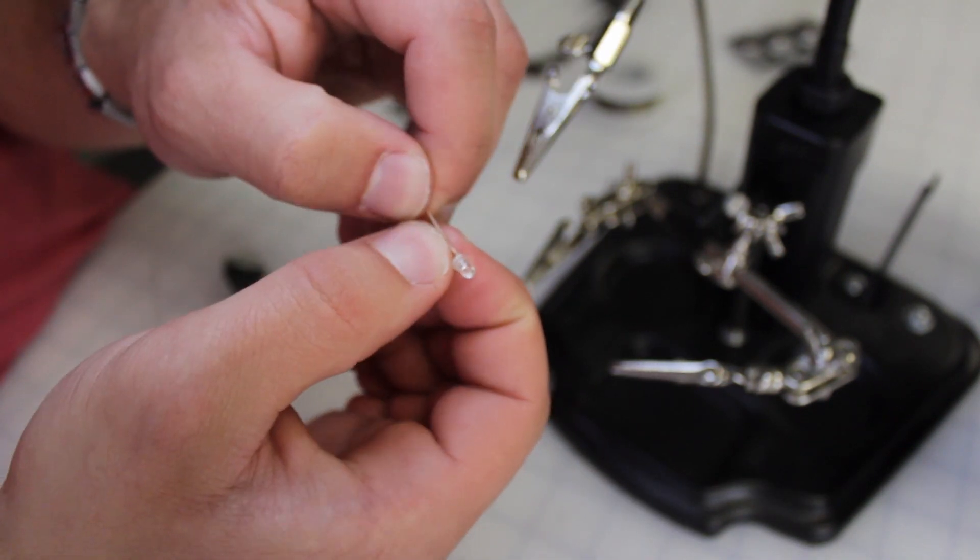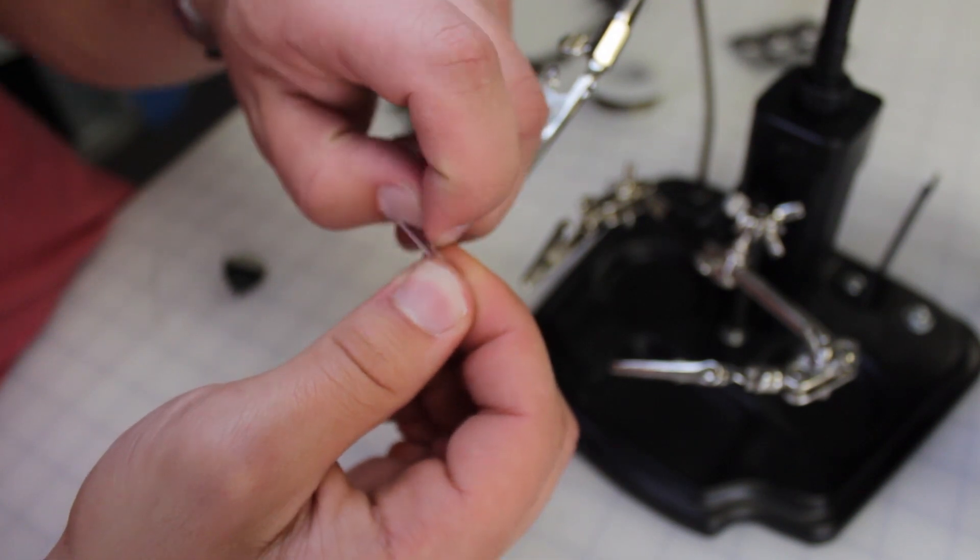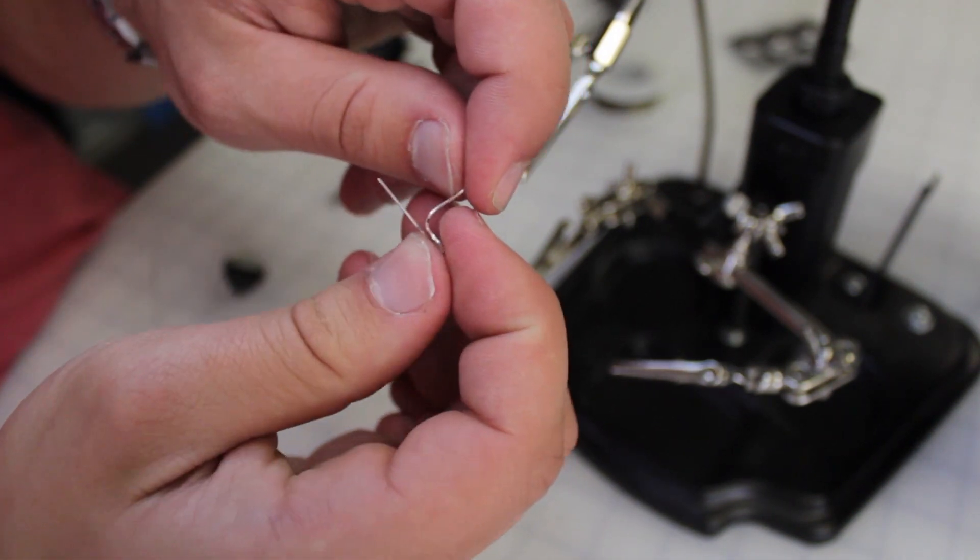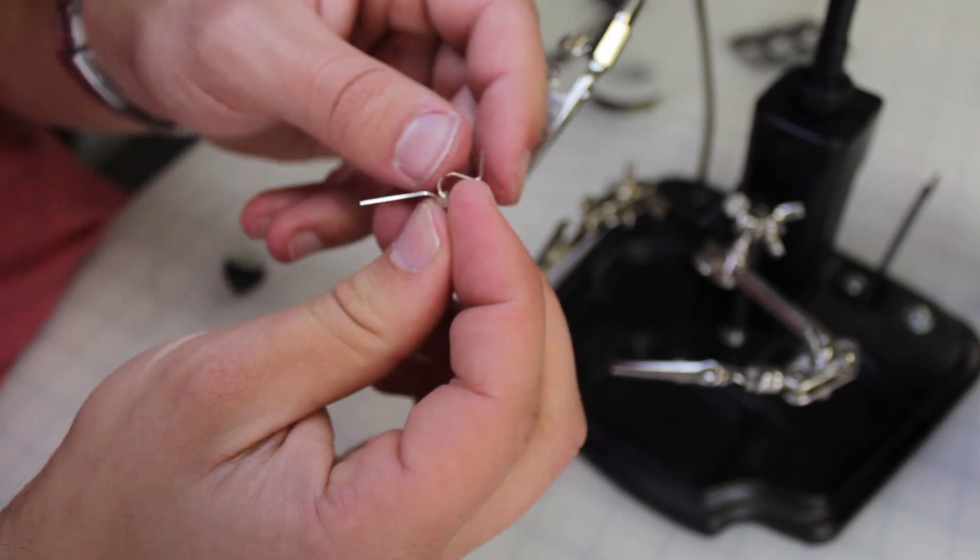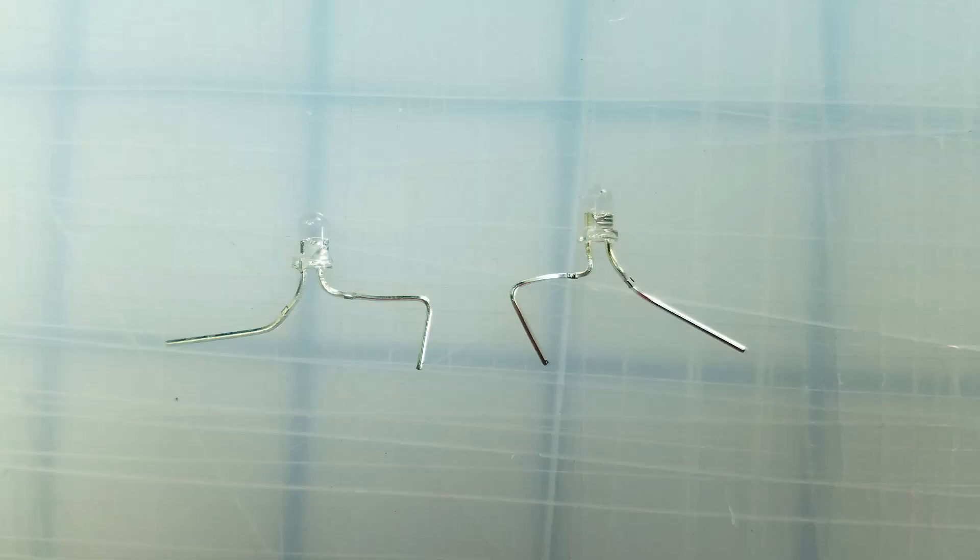Take one of the LEDs and bend two thirds of the longer leg outward. Then bend the last third down. After that, bend the other lead outwards. Repeat this for the other LED and they should end up looking like this.